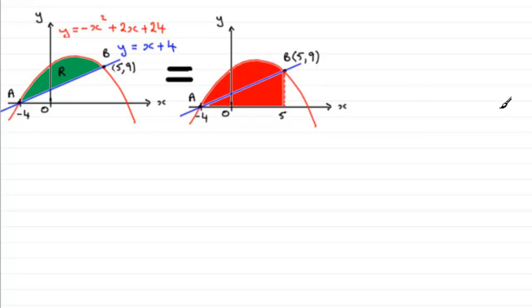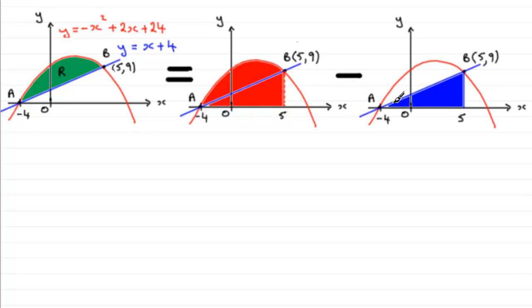To get the area bounded under the curve to the x-axis between minus 4 and the line x equals 5 is going to require integration. And then for this shape here, I could integrate y equals x plus 4 between minus 4 and 5, but because it's a simple geometrical shape, a triangle, I might as well just simply use the formula for the area of a triangle.